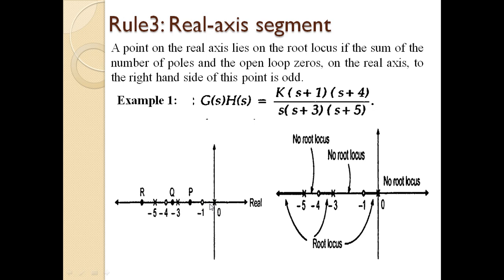If point P is between 0 and -1, counting roots to the right gives one, which is odd, so there is a root locus between those two roots. For point Q between -4 and -3, counting gives three — odd again — so there is a root locus there. Between -4 and beyond, five roots to the right means odd, so root locus extends to infinity.